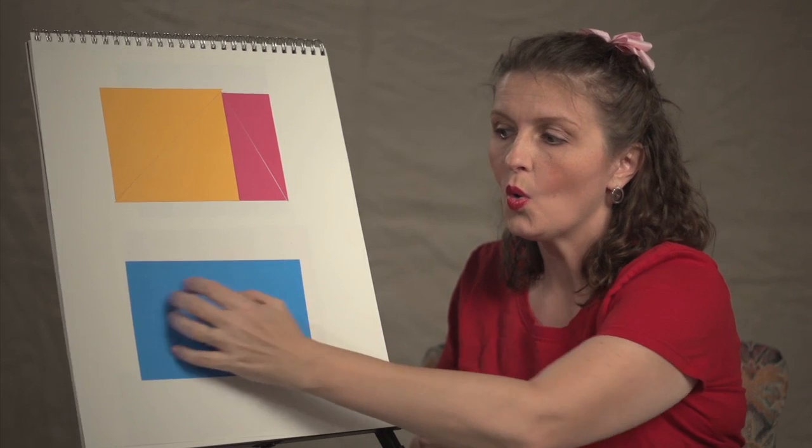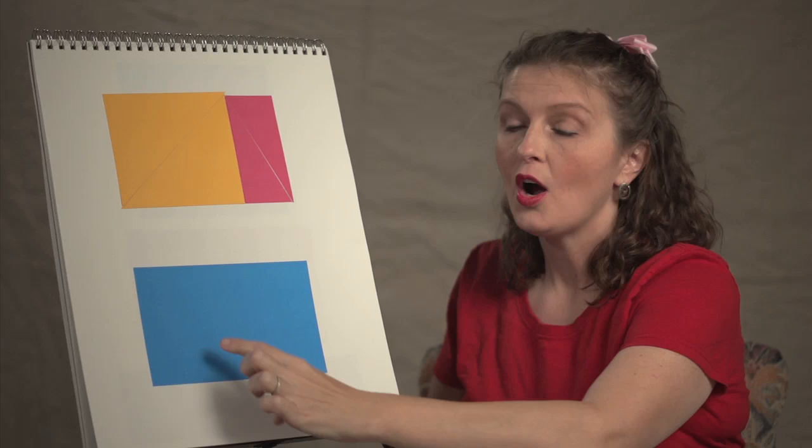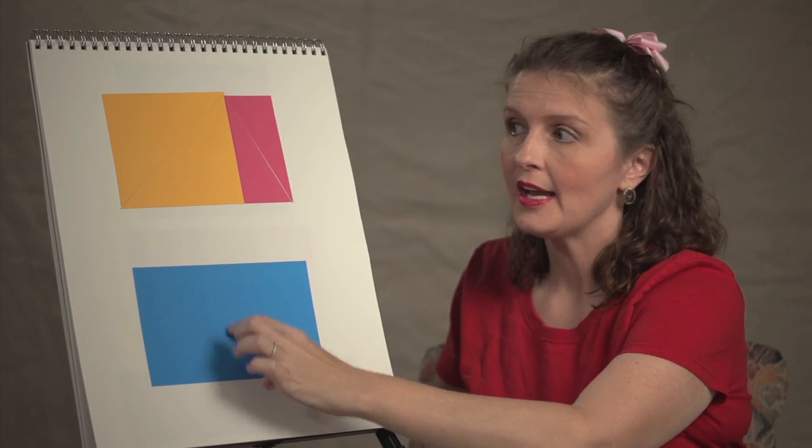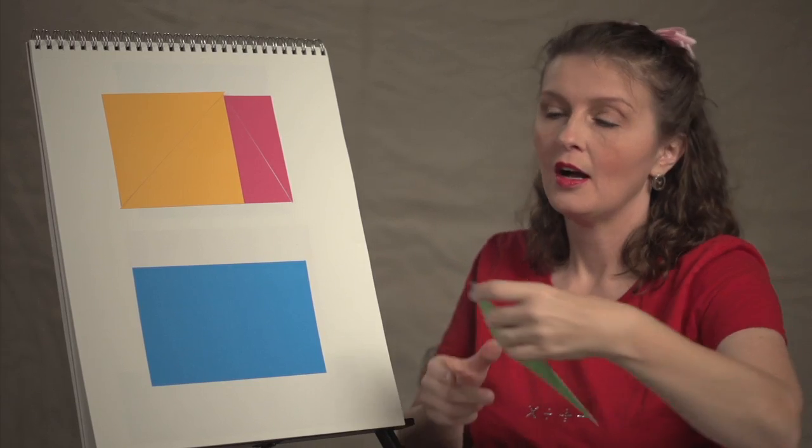So the area, or this part here, of the rectangle is really twice the area of the triangle.